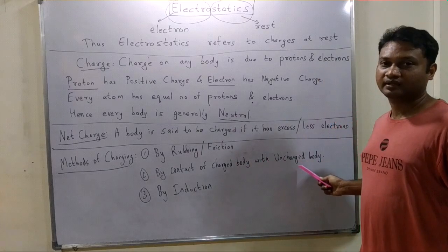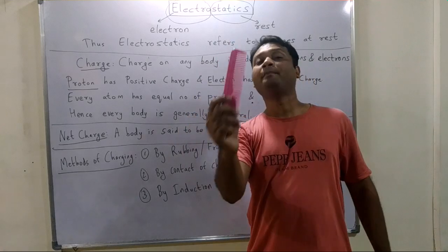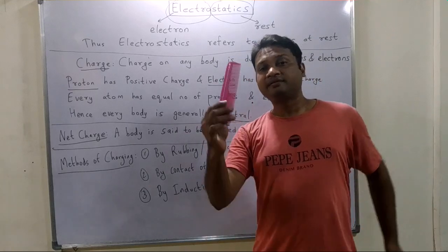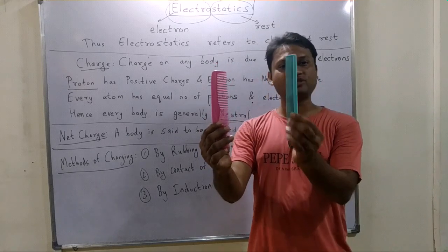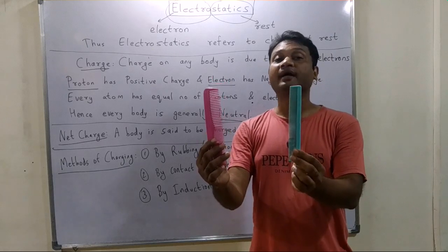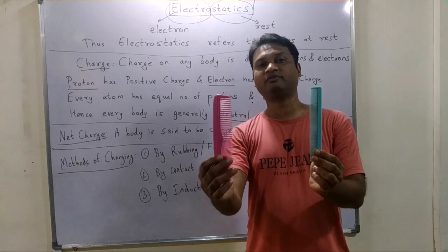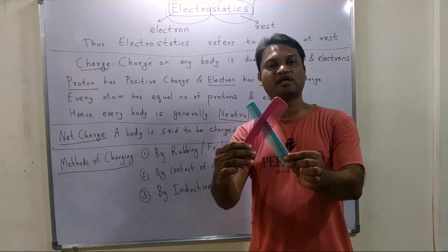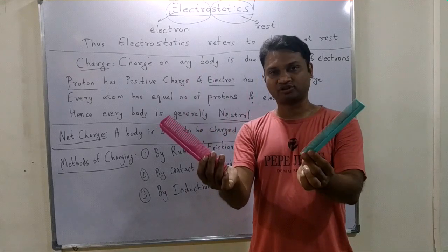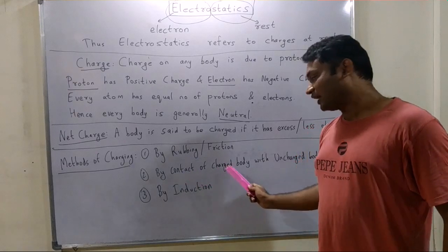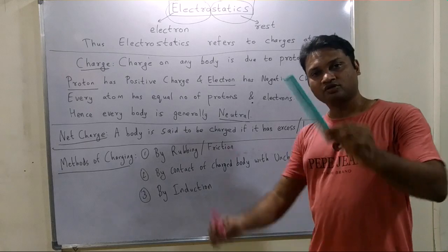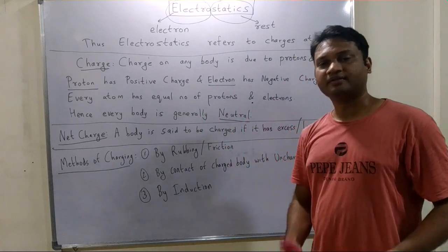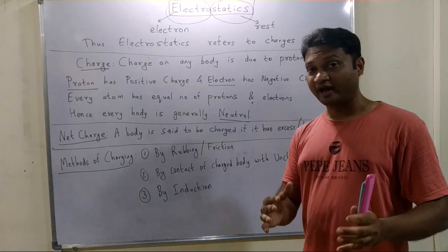The second method of charging a body is by contact of a charged body with an uncharged body. Suppose I combed my hair and the comb became positively charged due to transfer of electrons from comb to hair. If I touch this charged comb with a neutral comb, there is redistribution of charges and both combs attain positive charge.